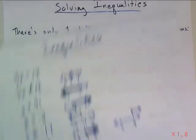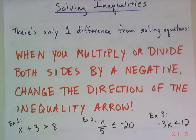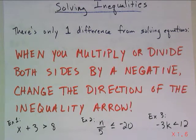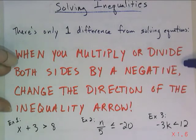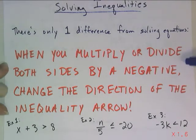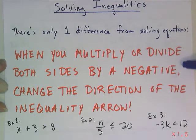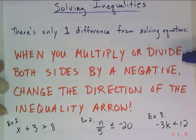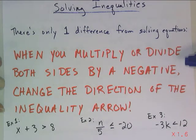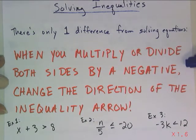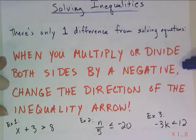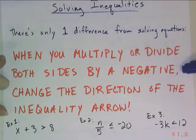Now we want to talk about solving inequalities. When solving inequalities, there's really only one difference from solving equations. When you multiply or divide both sides of your inequality by a negative number, you have to change the direction of the inequality arrow. You have to.